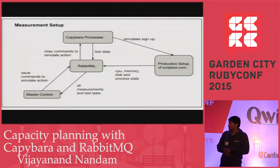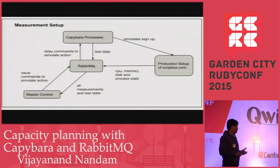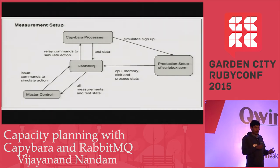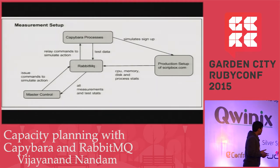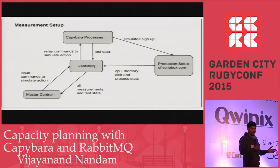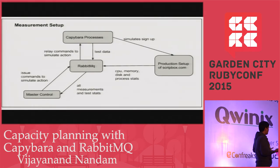This is the measurement setup I've taken. There's a master control — our Rails application — which sends commands to RabbitMQ, which in turn releases these commands to the Capybara processes. These processes run on Digital Ocean nodes, or you can run them on any other high-memory server. The master control sends commands to the Capybara node to simulate a process on the web application.